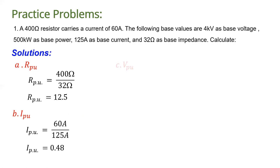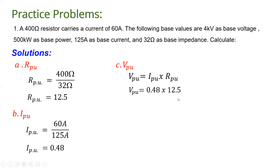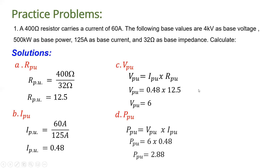For letter (c), the per unit voltage: using Ohm's law, per unit voltage equals per unit current multiplied by per unit resistance. Substituting the values gives 6.0. For the per unit power: per unit power equals per unit voltage multiplied by per unit current. Substituting the values gives 2.88 for the per unit power.